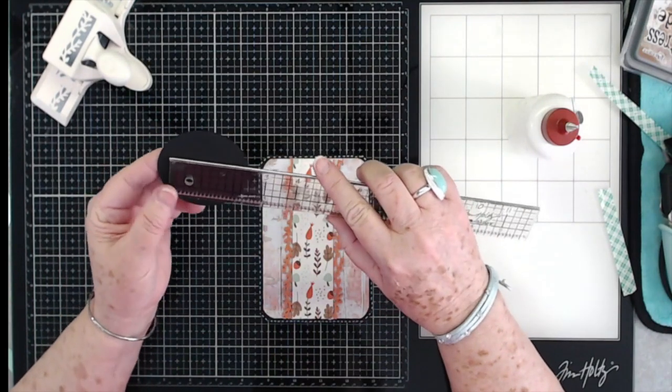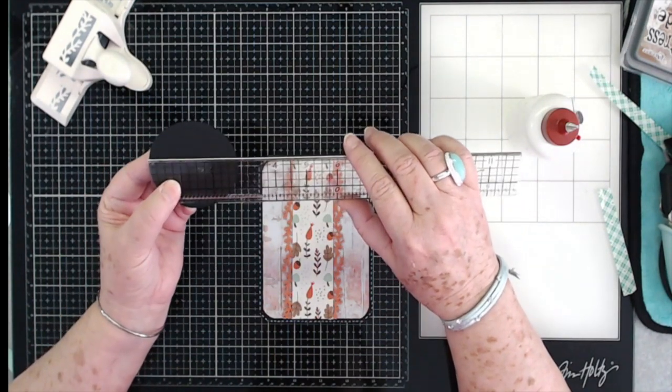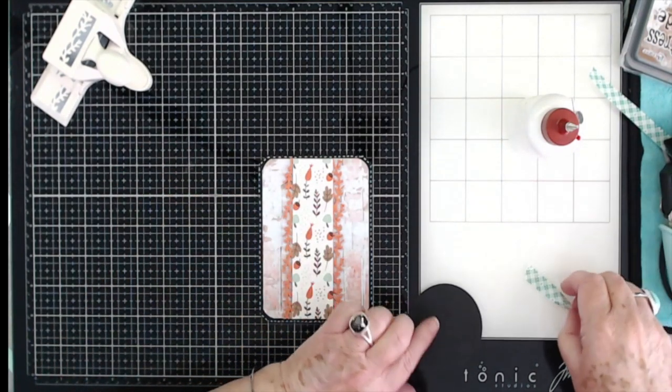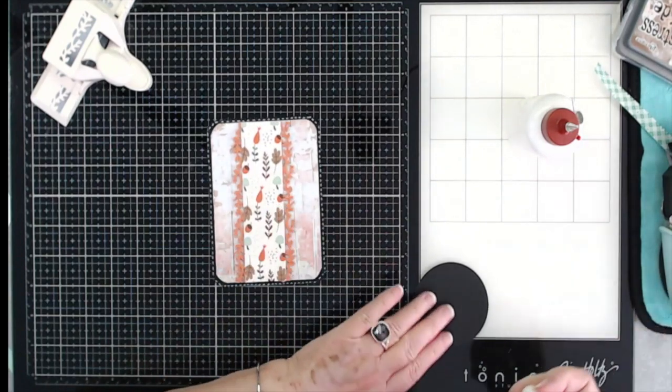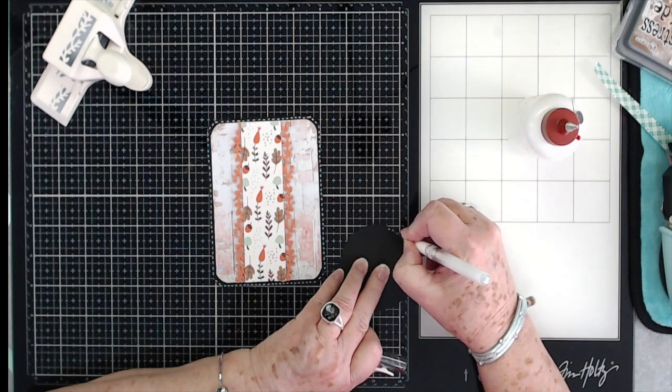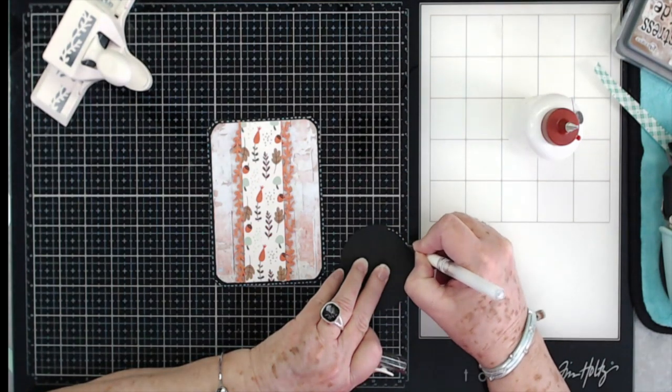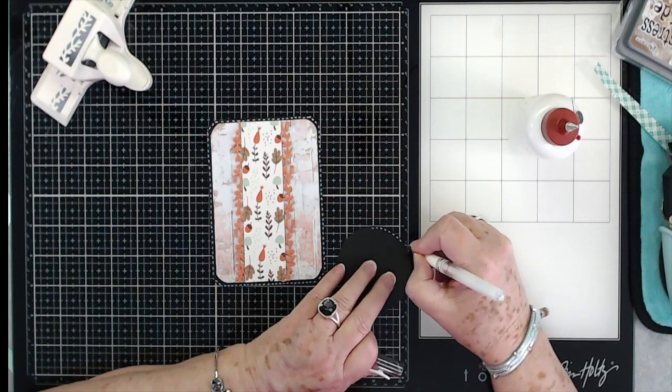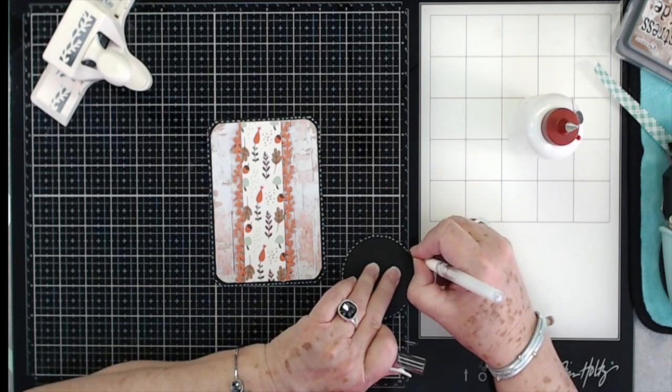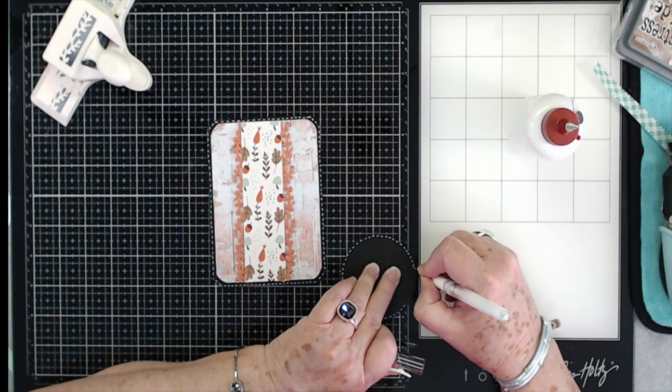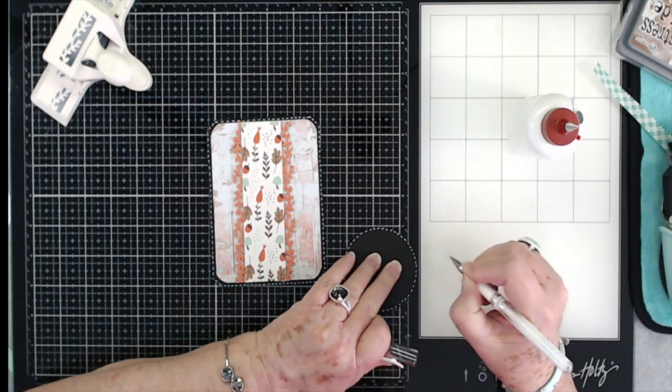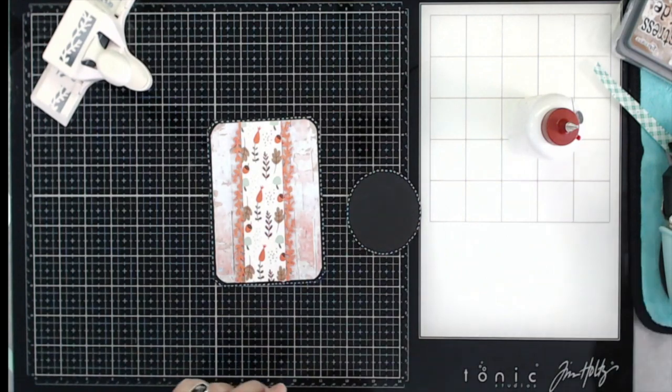And then I have used my favorite circle dies, and this is the two and three quarter one. I will link those below, you can still get these. Now I'm going to take my Signo pen again and I'm going to go around the edges of this and make some stitch marks, right at the very tip. I will link these pens below as well, we still have quite a few of these.